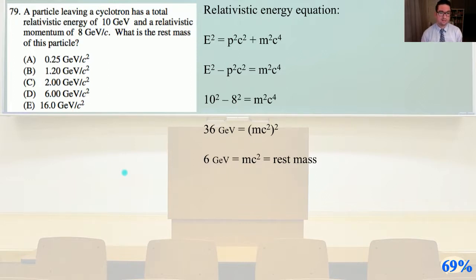So 36 GeV equals mc squared, that whole quantity squared, and mc squared is our rest mass, so take the square root of each side. 6 GeV equals mc squared equals our rest mass, and that is answer D.